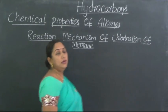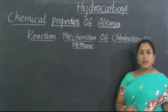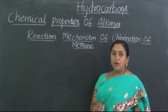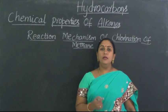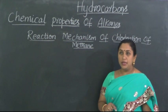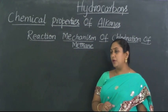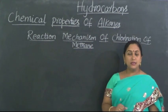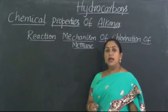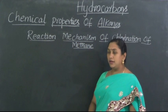Let us understand the reaction mechanism of chlorination of methane. How is a regular reaction different from a reaction mechanism? In a regular reaction, we write only the reactants, the necessary conditions, and by maintaining those conditions, which products are obtained and how many moles of such products are obtained is represented. It is a simple equational representation of reactants and products.